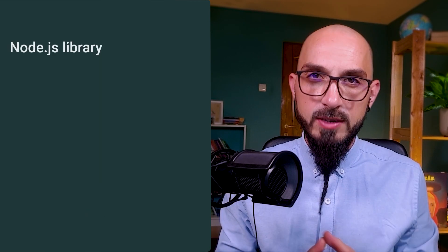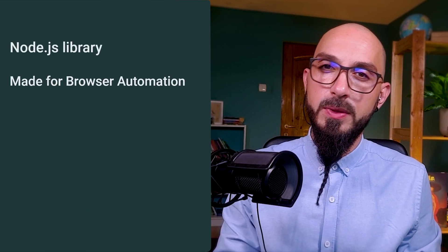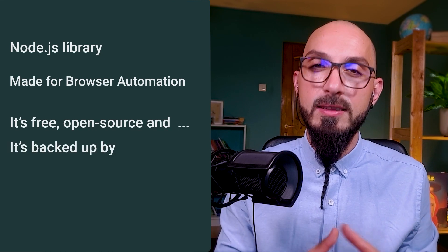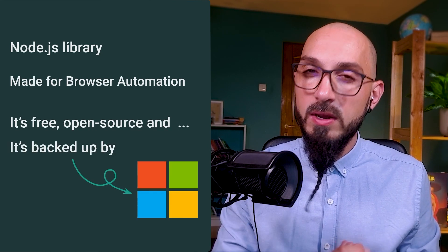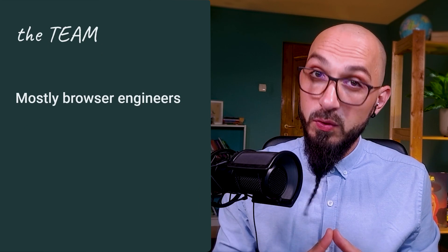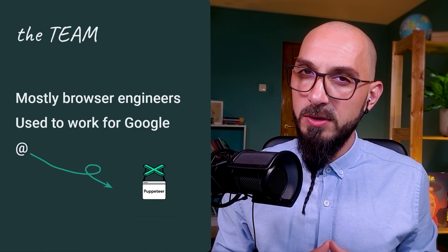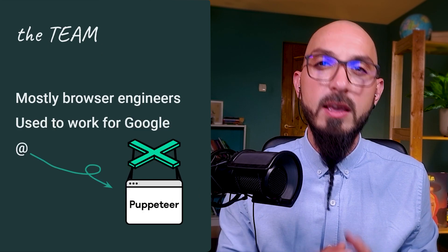I hope most of you guys already know about Selenium, so allow me to give you a Playwright in a nutshell in 30 seconds. It's a Node.js library made for browser automation. It's free, open source, and it's backed up by Microsoft. The team behind it are mostly browser engineers — some of them used to work for Google on a tool called Puppeteer. If you feel a craving for more Playwright goodies, head over to this link, where you'll get a better idea of how Playwright works, how to install it, how to generate scripts, and so on. You can come back to this one afterwards.